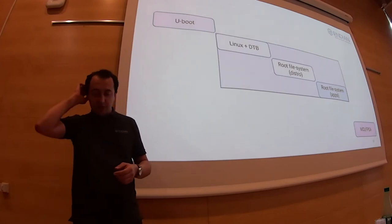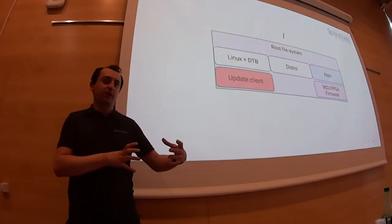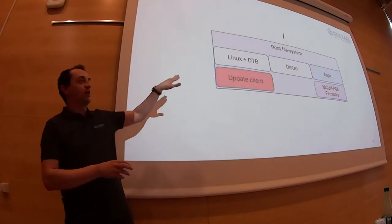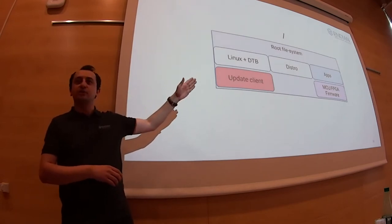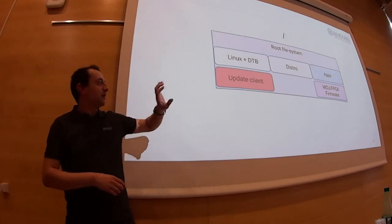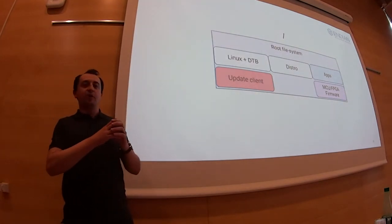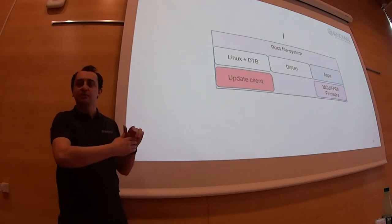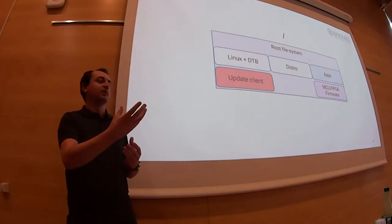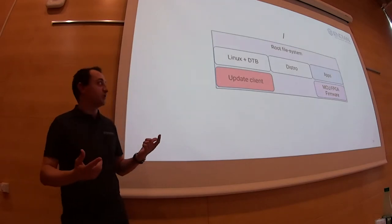Image-based updates: what's an image? You bundle everything on your embedded Linux device — beside the bootloader, which you don't update — so you have your root file system with the Linux kernel and device tree inside (normally under /boot), your distribution components, application, update client, and maybe microcontroller firmware. When you create an update image it contains everything, always. Even if you're only updating the app, you write the whole thing — you always have a single working image that you flash on your device. This has been the approach for the last 15-20 years in embedded Linux.